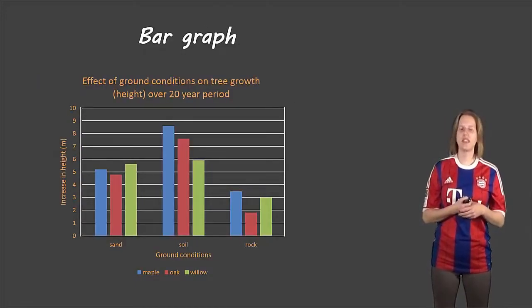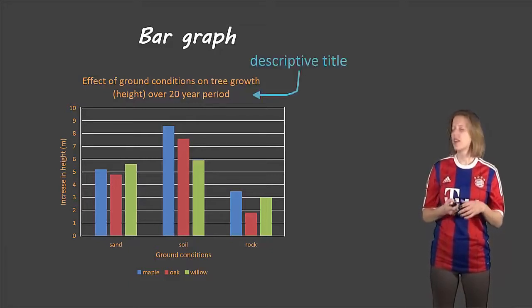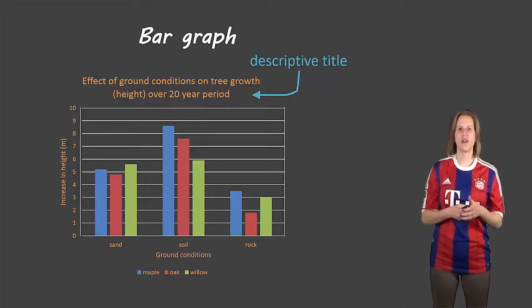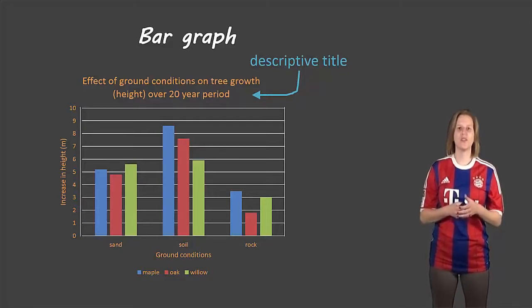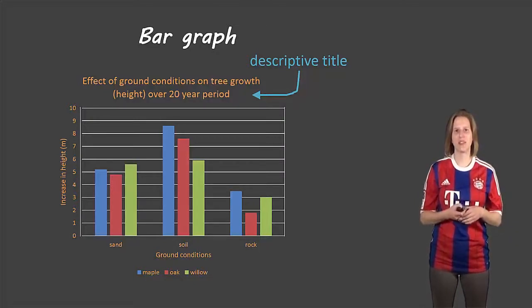So let's take a look at each of these types of graphs and the information we need to know. First thing, you need a descriptive title. The types of titles we use for our graphs are very similar to those that we use for our data tables. So if you don't remember how to write a descriptive title, please rewatch the video on observations and take a look at the section on writing titles for data tables.